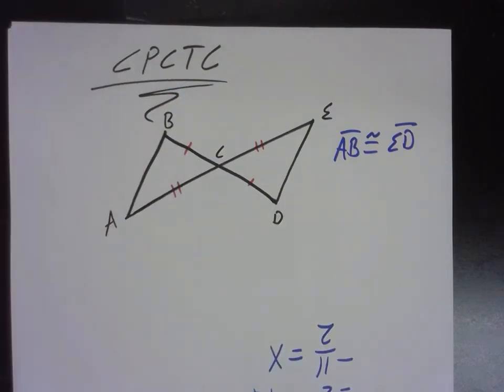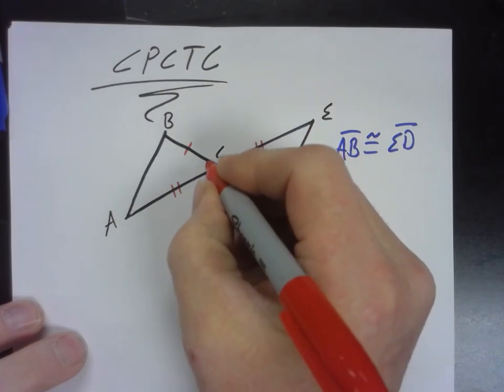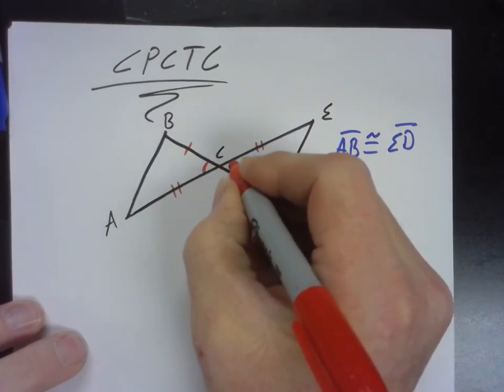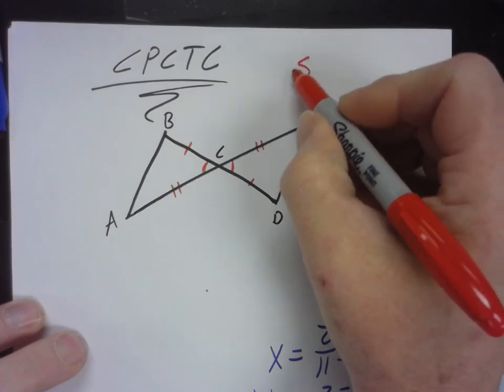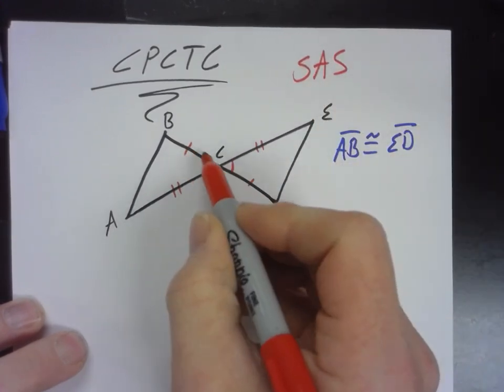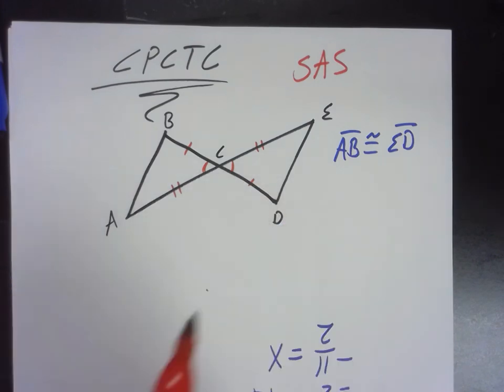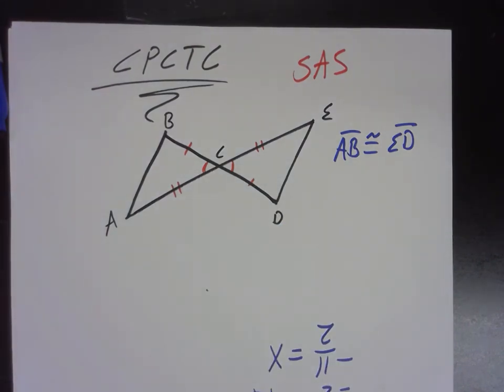Okay. So our vertical angles are congruent, aren't they? So you said side angle side. So everyone see side angle side now? Okay. So those two triangles are congruent by side angle side. That's what he's saying, right?